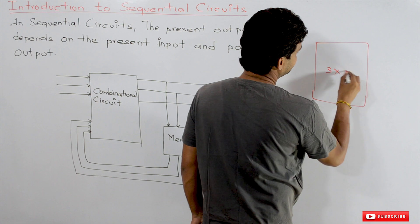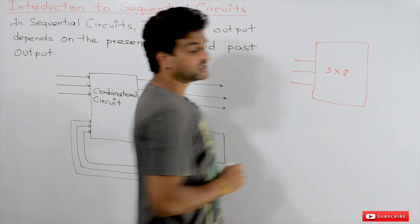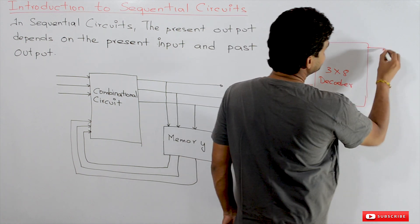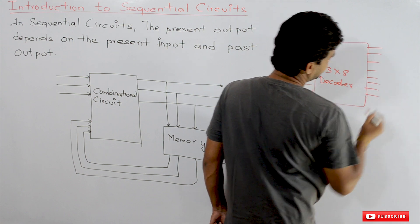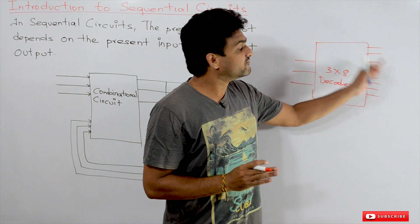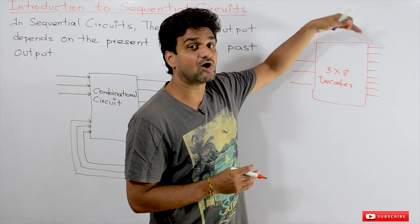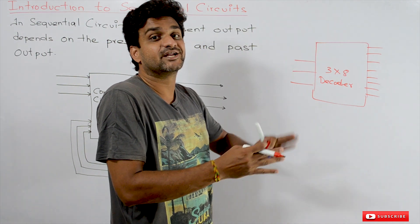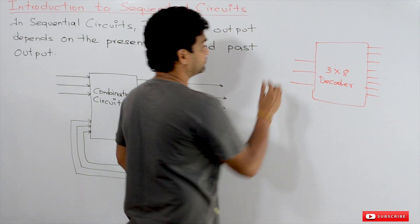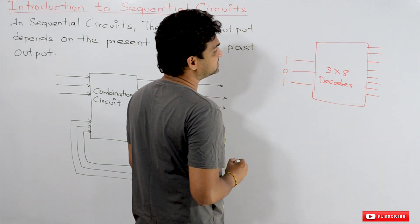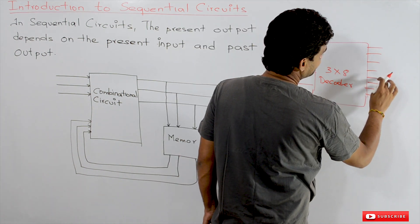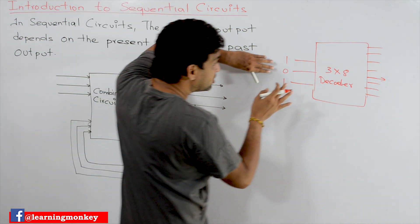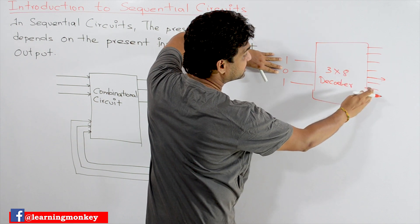For example, take a 3-by-8 decoder, which is a combinational circuit we discussed in our previous section. The present output of this decoder is dependent upon the present input. For example, if the input is 1-0-1, then that particular output line will get activated — that is the principle of the decoder.